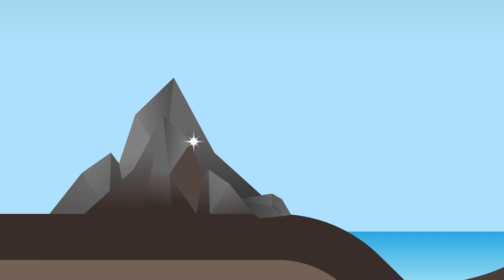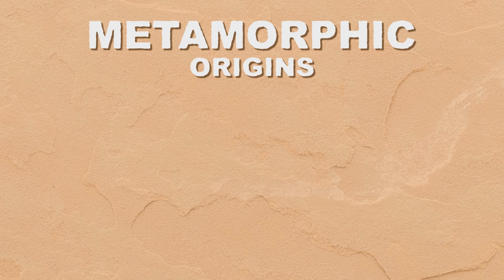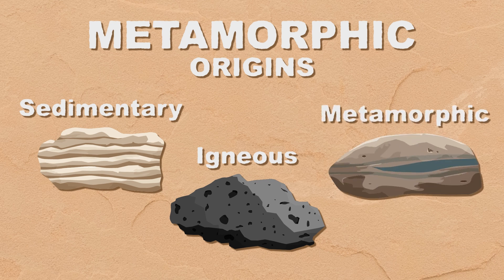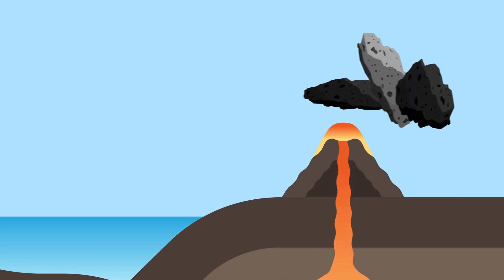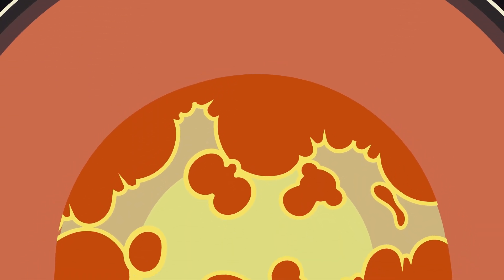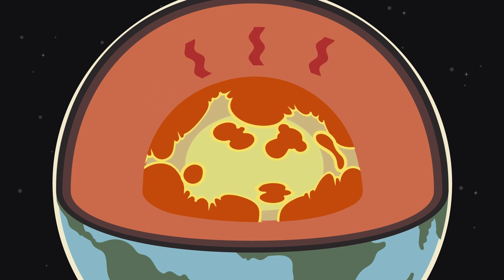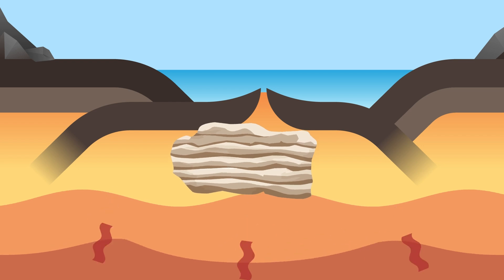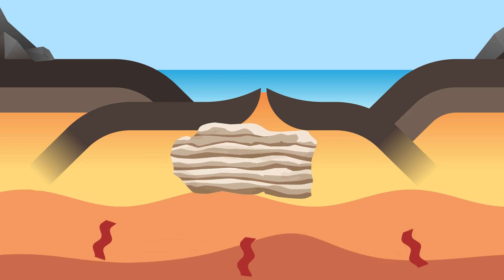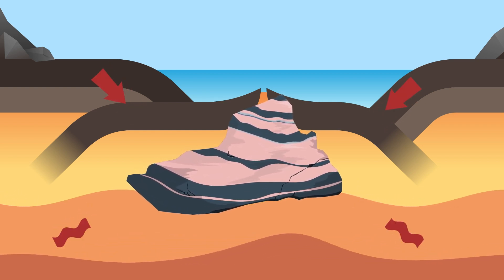Let's learn about the rock type of metamorphic. Metamorphic rocks can originate from any type of rock, including sedimentary, igneous, or other metamorphic rocks. Metamorphism is when a rock is reshaped — this only happens in extreme climates that occur deep in the earth, where pressure builds up or temperatures get very hot. A rock can even be reshaped by being close to magma.